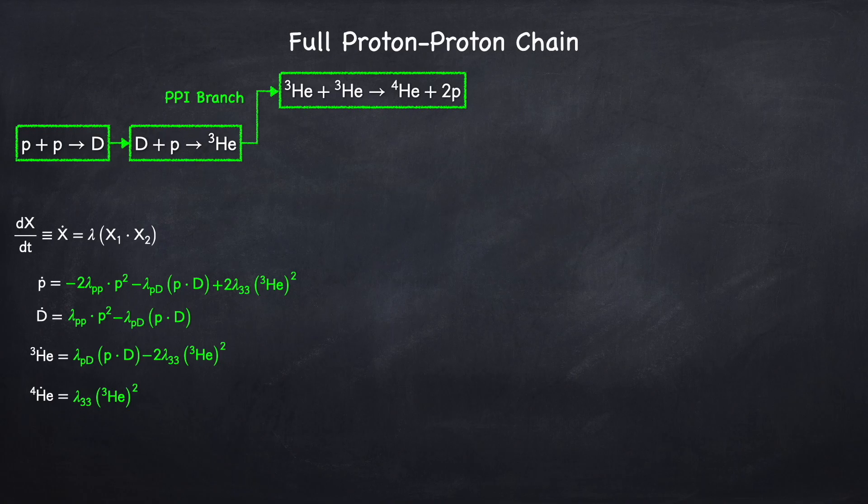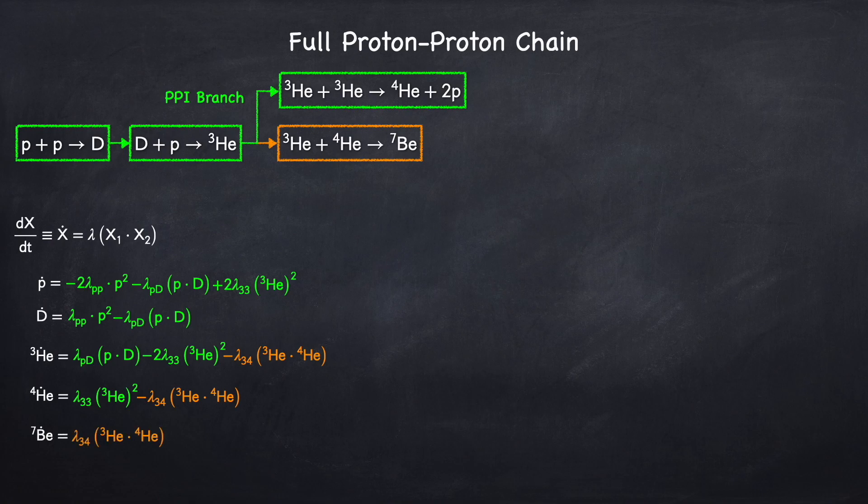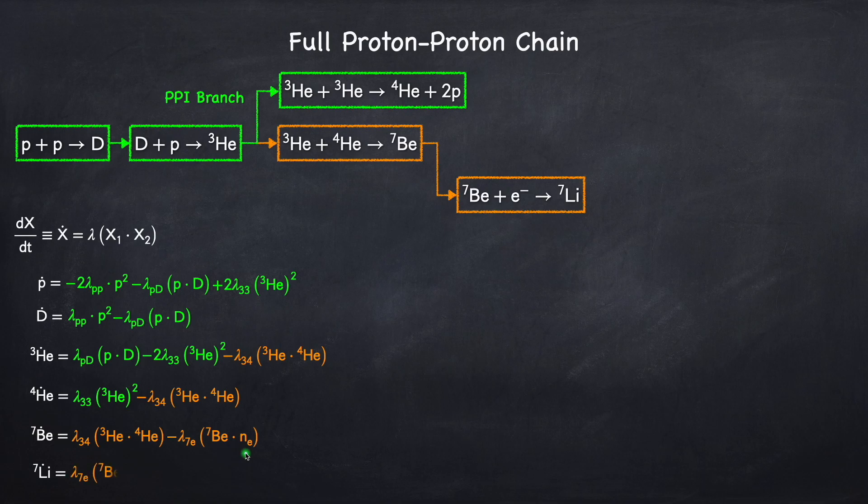Now we have to add the PP2 branch. So, for the PP2 branch, instead of this last step, the helium-3 captures a helium-4, and converts into beryllium-7. So, at this point, you should be getting the hang of this. We're going to destroy a helium-3 nucleus. We're also going to destroy a helium-4 nucleus, and we're going to create a beryllium-7 nucleus. Next step in the PP2 branch, beryllium-7 will capture an electron and convert into lithium-7. So, we now destroy a beryllium-7. Ne here is the number of electrons. In principle, I should also be writing down a differential equation for the number of electrons, but I'm not going to do that here. I just want to show you how to set this up. So, I'm just going to do it for the nuclei. So, finally, we have to add that this created a lithium-7 nucleus.